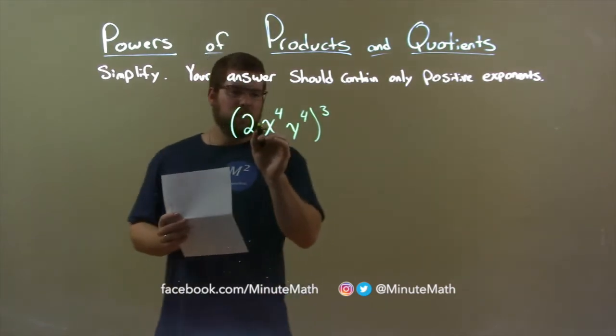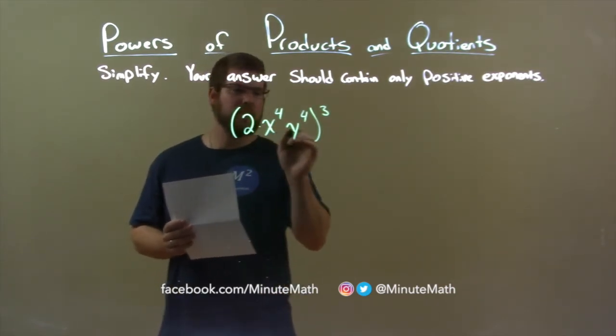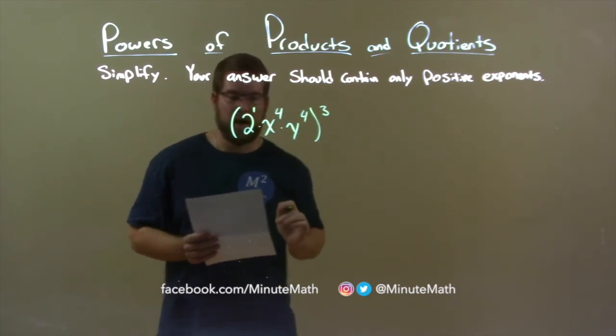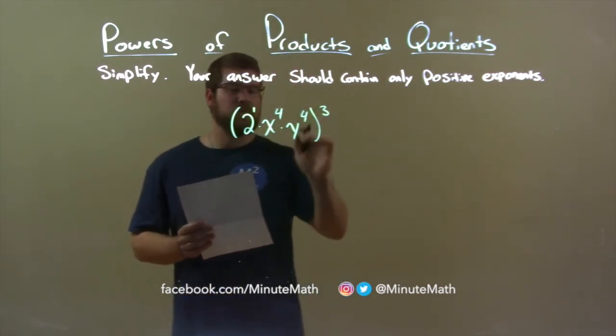Well, we know each one here, 2 and the x, between there is multiplication, and between x to the 4th and y to the 4th is also multiplication. 2 is also raised to the 1st power. Well, when we multiply all this in parenthesis to the 3rd power,